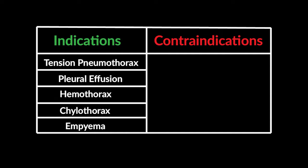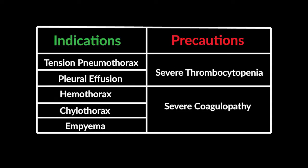Contraindications: there are no true contraindications to neonatal chest tube placement when indicated. Correction of pre-existing severe thrombocytopenia or coagulopathy should occur prior to or concurrently with chest tube insertion.